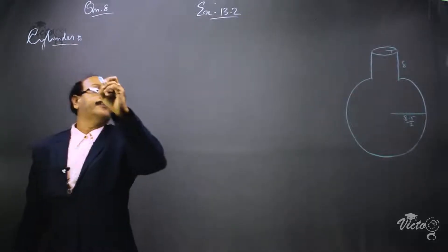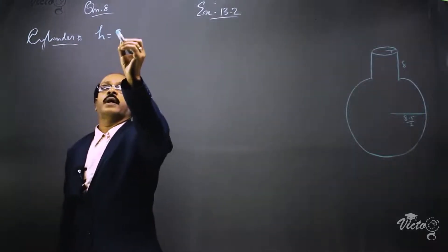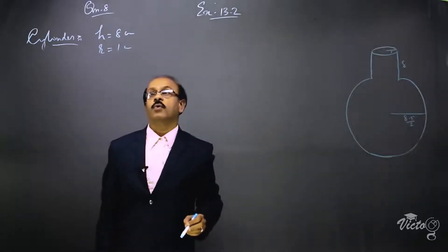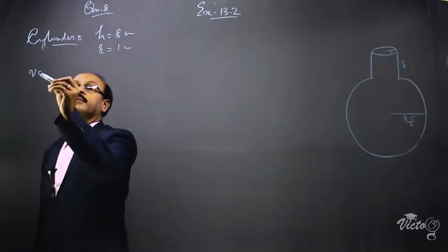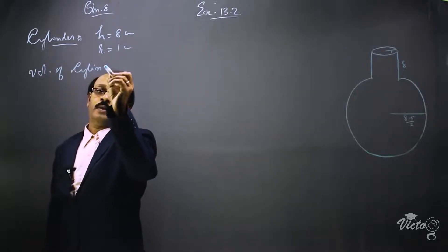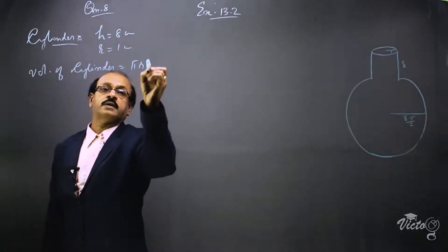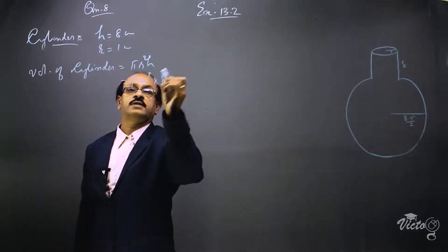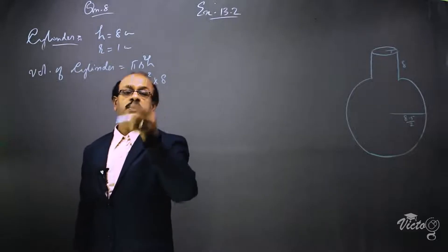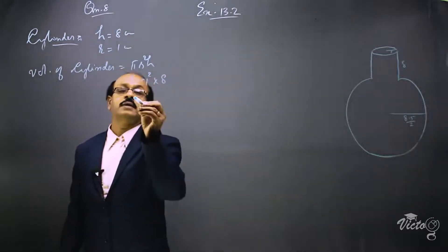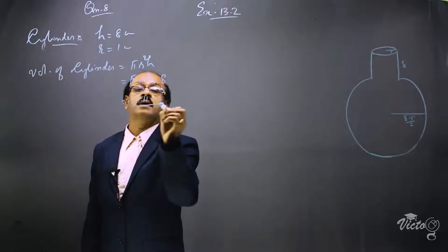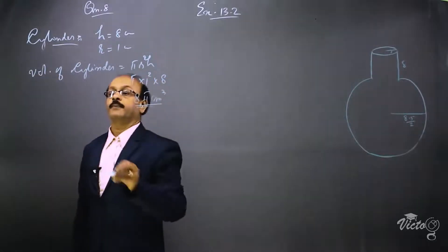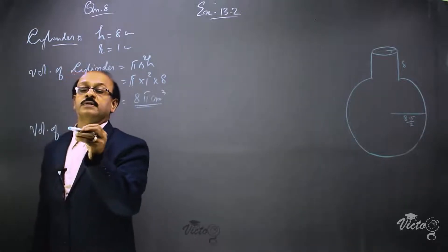For the cylinder, height h is equal to 8 centimeters and radius r is equal to 1 centimeter. The volume of the cylinder is pi r squared h, which gives pi into 1 squared into 8, equal to 8 pi centimeter cube. That is the volume of the cylindrical part.